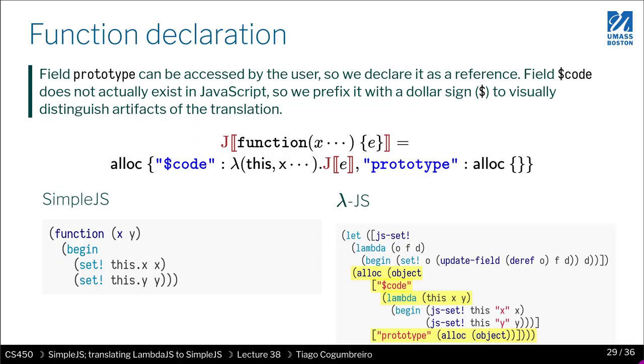Translation of function declaration. The translation of function declaration has to do with the three things we talked about before. You have to make explicit what is the code and what is the prototype, and then the heap allocations as well.